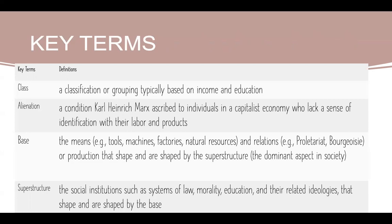The base refers to the means of production — for example, tools, machines, factories, natural resources — and the relations of production, such as those between the proletariat and the bourgeoisie, that shape and are shaped by the superstructure. The superstructure refers to social institutions such as systems of law, morality, and education, and their related ideologies, that shape and are shaped by the base.